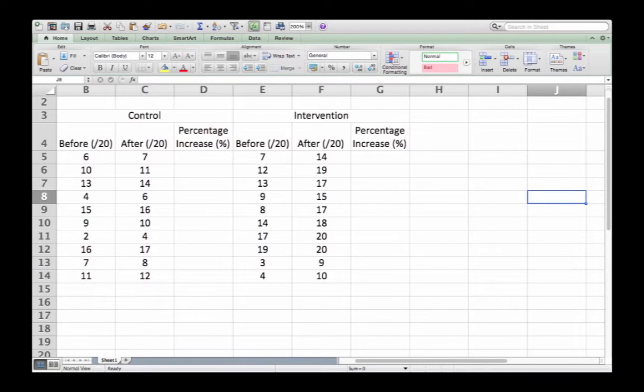Those two sets of data can be whichever you wish to compare. In this example I have two classes: one receiving an intervention that might improve their learning, and the other which is just a control.